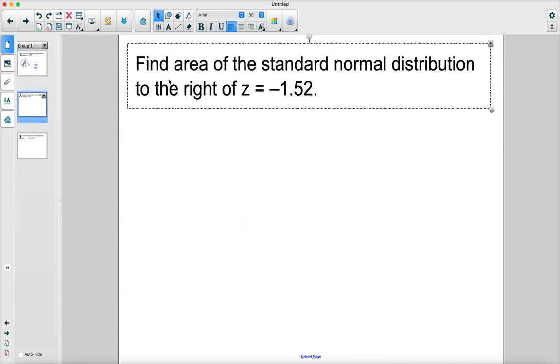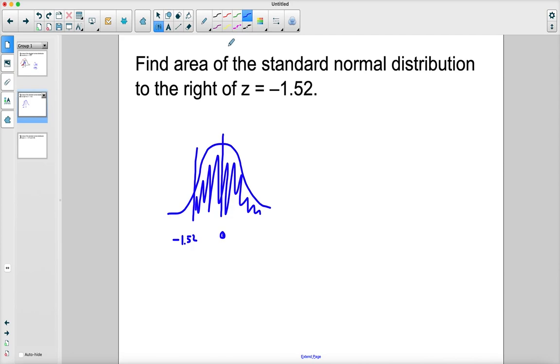All right, let's look at one more. Okay, so here we want to find, let me do my curve. Don't always do a sketch. So there's 0 in the middle. To the right of -1.52. So negative, that'll be to the left, so -1.52. Okay, notice it says to the right. So I want to find to the right. So everything to the right of this value. So basically all of this.